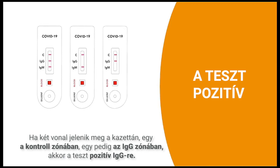If two lines appear on the cassette, one in the control zone and one in the IgG zone, the test is positive for IgG.